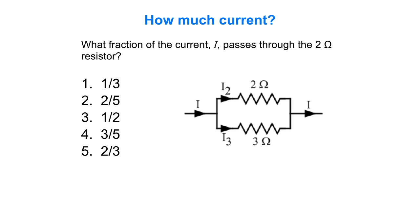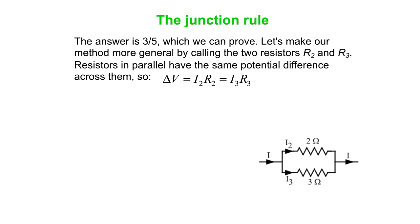So, what do you think the fraction is of the current I that passes through the 2 ohm resistor? You might want to pause there and just see what you think. Alright, so the answer turns out to be 3 fifths, and we're going to prove that.